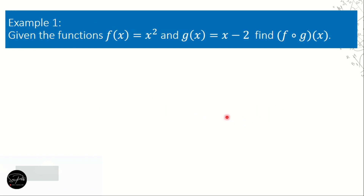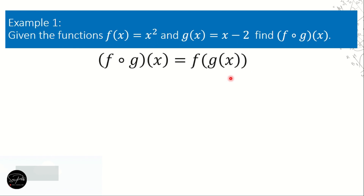Let's go back to example number 1 from video lesson part 1. Given the functions f of x is equal to x squared and g of x is equal to x minus 2, find f composite g of x. Our representation is: f composite g of x is equal to f of g of x.